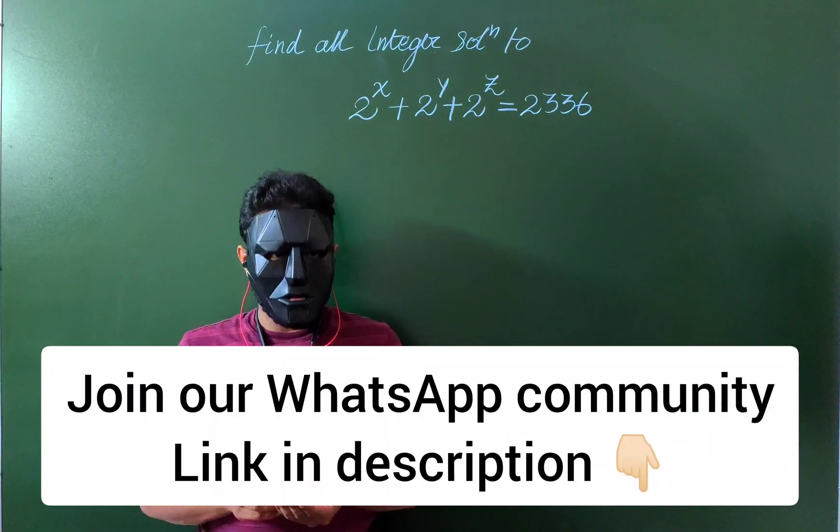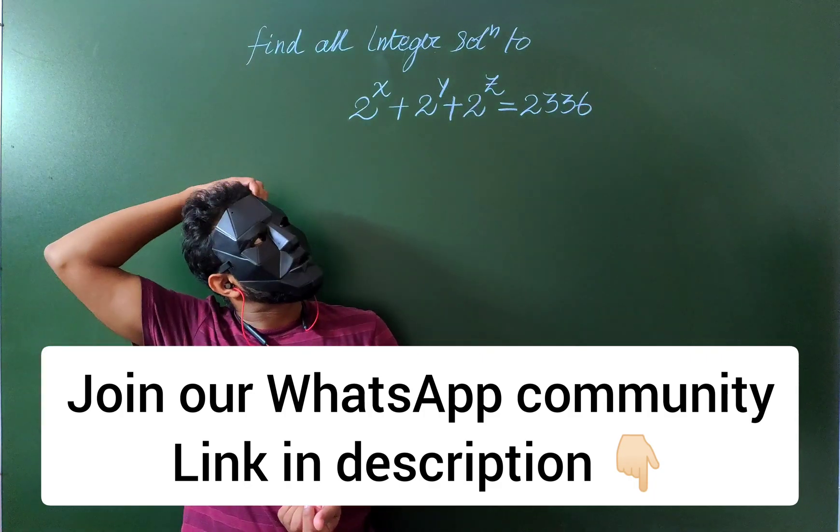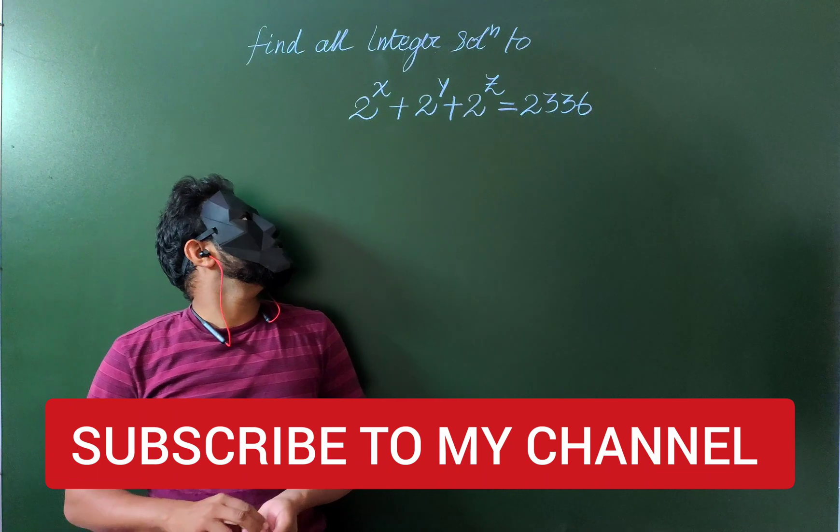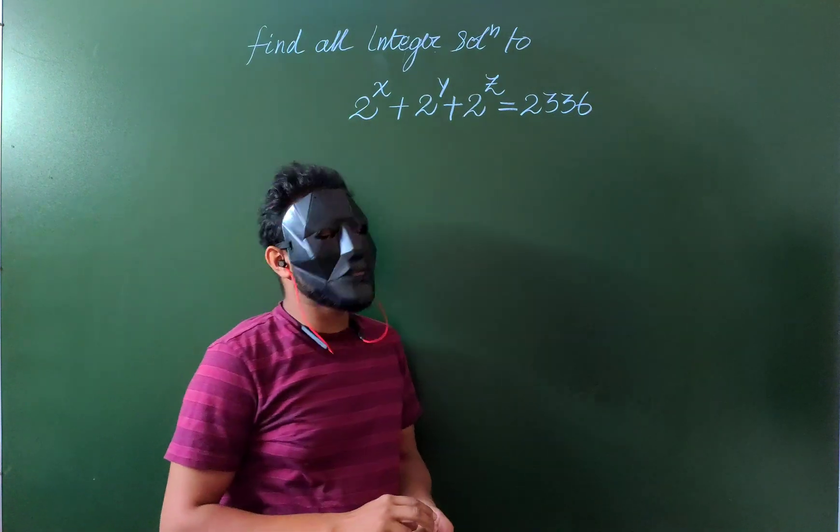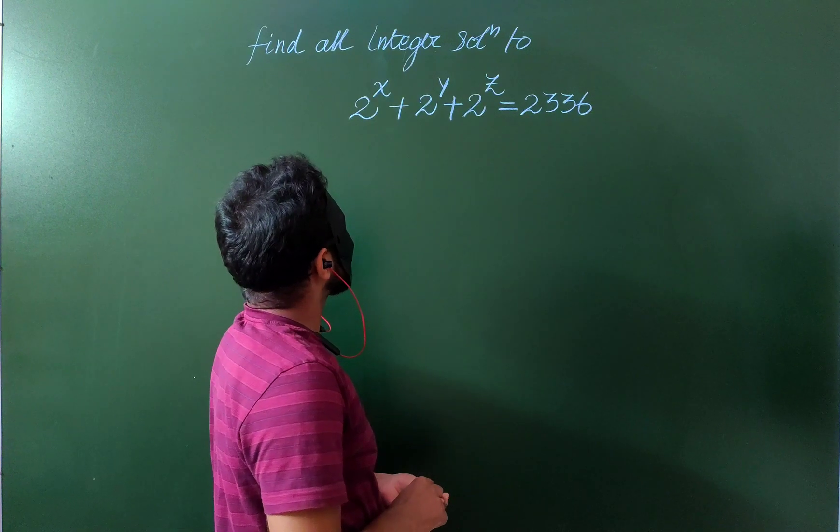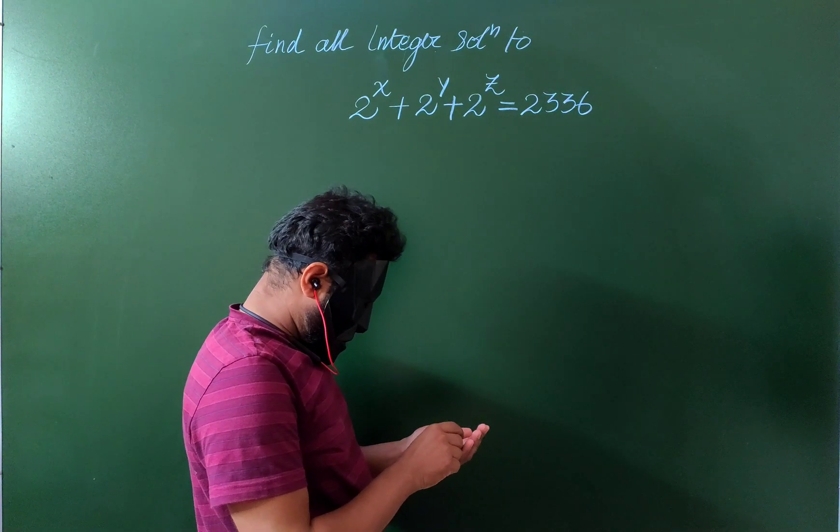Hello everyone, today we have a number theory problem to solve for positive integers. The equation 2^x + 2^y + 2^z = 2336 seems very symmetric and clean, so first we should check whether some of them or all of them are equal or not.